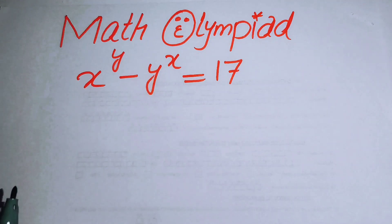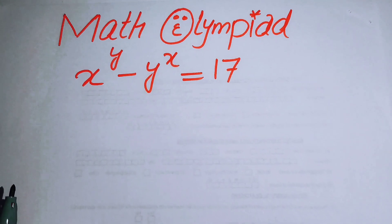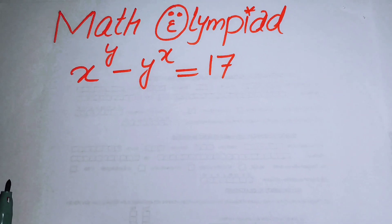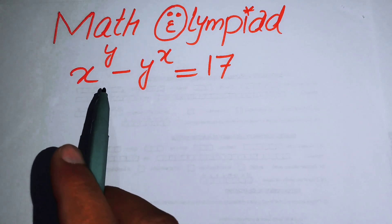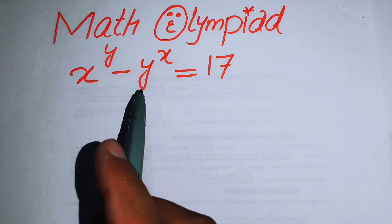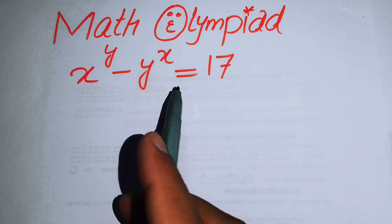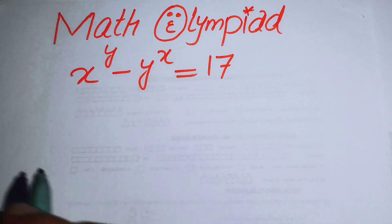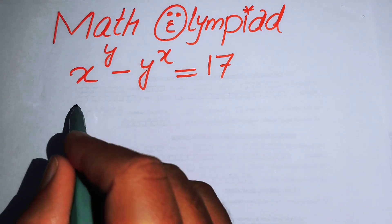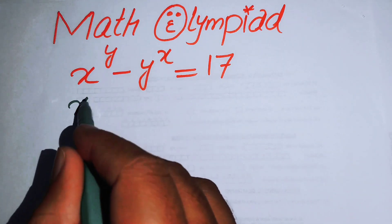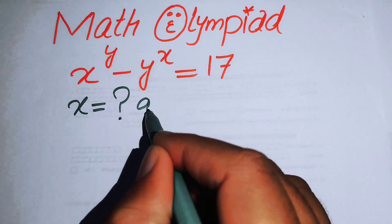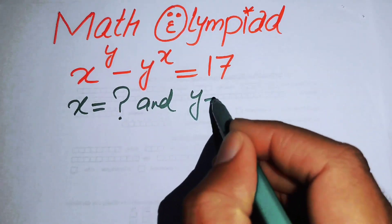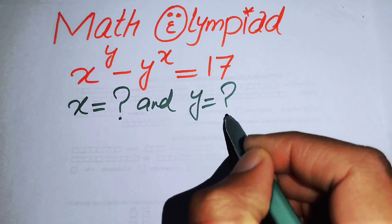Hello everyone, welcome back to the Map of Mathematics. In this video we are going to solve this nice algebra problem: x to the power of y minus y to the power of x equals 17, and we will solve for the values of x and y.